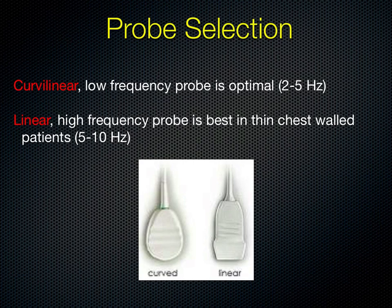The probe you choose depends on what you are looking for. The curvilinear or low-frequency probe used for cardiac imaging is best for deep, large views but not a lot of detail. So if you're scouting how you're going to perform a procedure, or assessing how large a patient's effusion is, use this probe initially. Also, if you're looking for pulmonary edema to see how deep it goes, you won't be able to see beyond six centimeters with a linear probe, so you choose the phased array or curvilinear probe in this case.